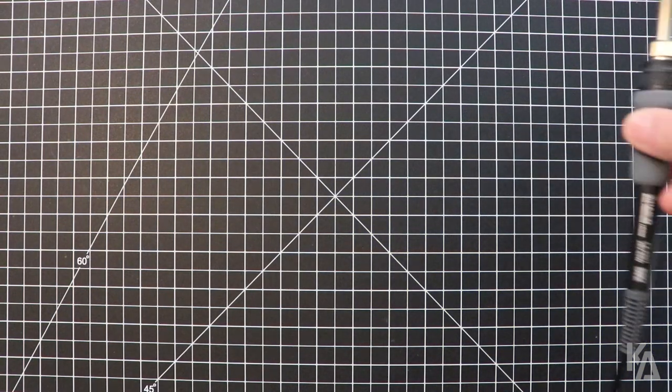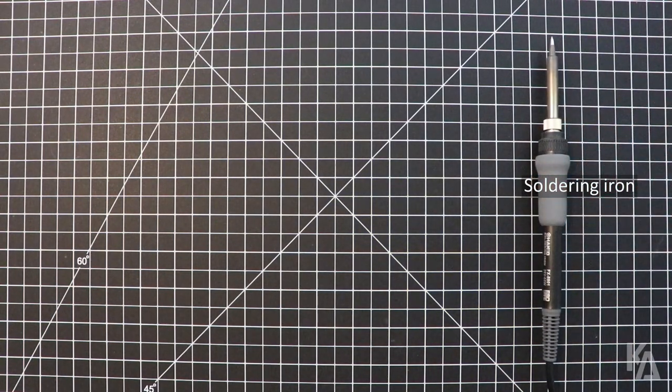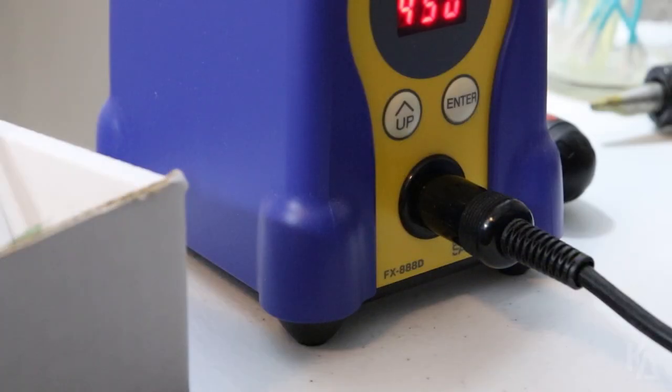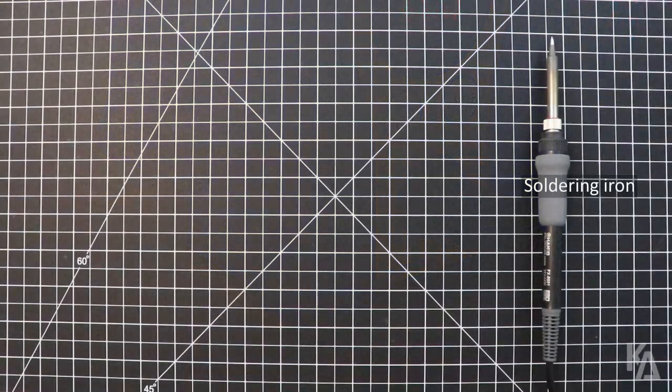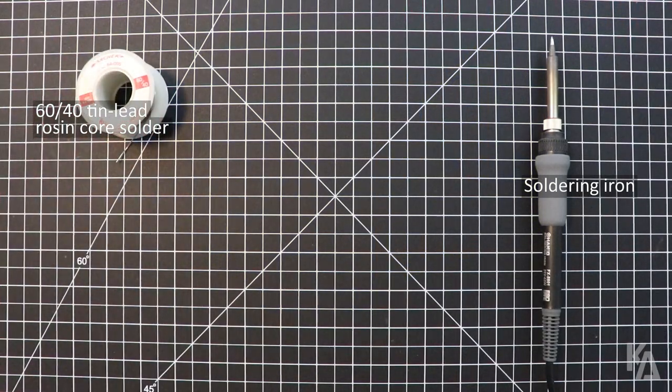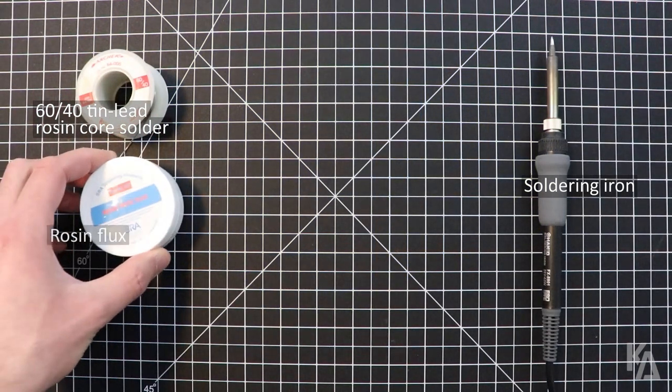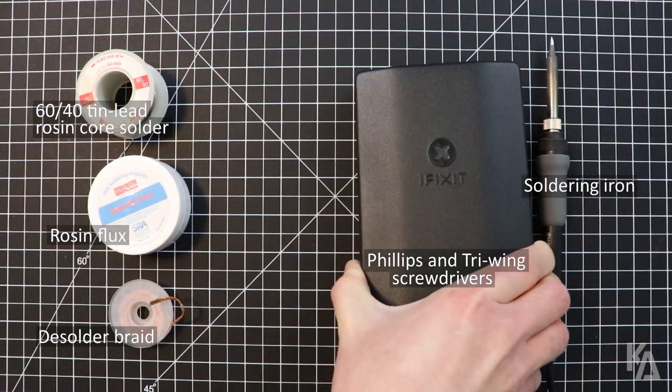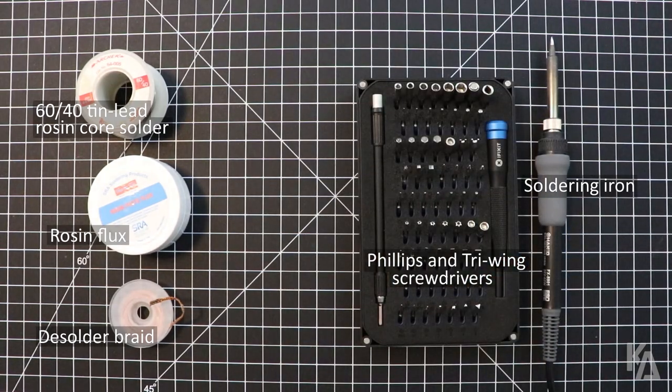Before we start, here's what you'll need for this repair. A soldering iron with temperature control and a fairly small tip. I use the Hakko FX-888D soldering station. A spool of 6040 tin lead rosin core solder. Some rosin flux. I use paste flux. Desoldering braid. Two screwdrivers, one with a small Phillips head and another with a small tri-wing head. I'm using the set from my iFixit toolkit.